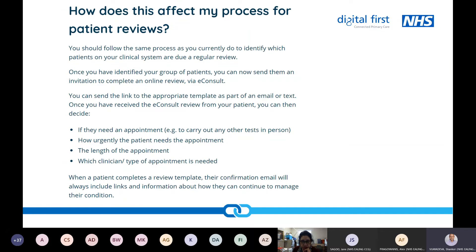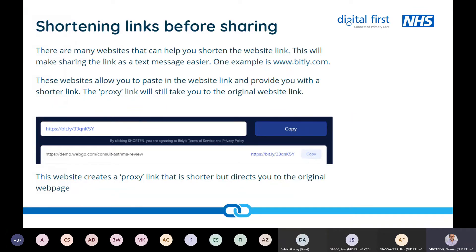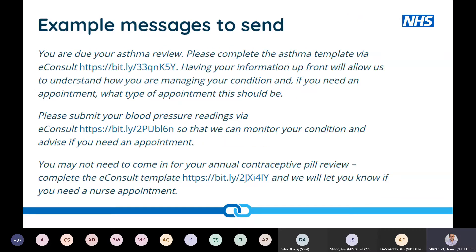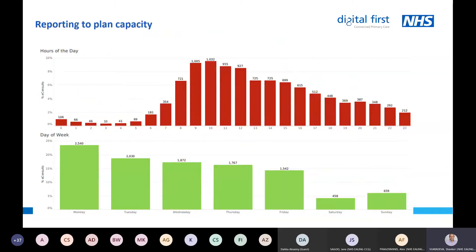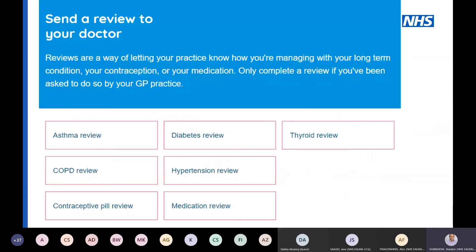The URLs are long and there are multiple links for different conditions. This does not replace your whole review process — it's intended to confirm and complement your process. You'd probably text the link to the patient, and you can use sites like bit.ly to shorten those links so they fit into a text message. You could set these up as presets on SystmOne or as Accurx template presets, giving you a couple of options for getting the link through to the patient.